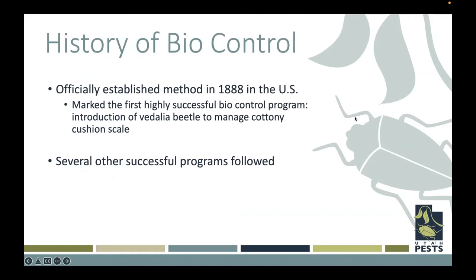I'm going to quickly go through the history of biocontrol. This is not a new practice — biological control has been going on since the late 1800s. In 1888 was the first highly successful biological control program: the introduction of the Vedalia beetle to manage cottony cushion scale in California.